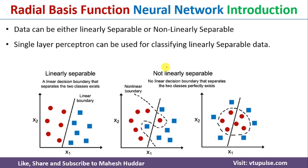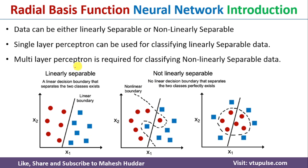Whenever we have linearly separable data we can use a single layer perceptron network to build the machine learning model. But whenever we have non-linearly separable data we cannot use a single layer perceptron network — we need to use a multi-layer perceptron network so that we can divide the data into multiple groups. A multi-layer perceptron network contains one input layer, one output layer, and one or more hidden layers.